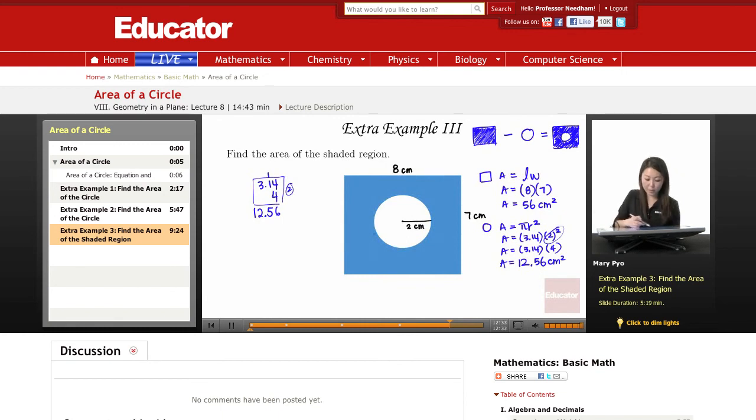Okay, now I have the area of the whole thing and the area of the circle. So I need to take away the circle, right? From the rectangle. So it's going to be 56 minus 12.56. So I need to do that.